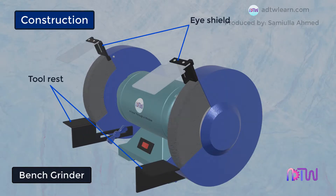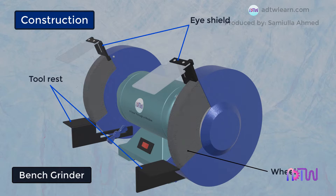A tool rest is also provided in front of the wheels to hold the workpiece while grinding. It should be tight and positioned very close to the wheel to prevent the workpiece from slipping down.